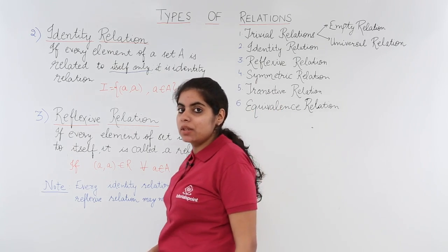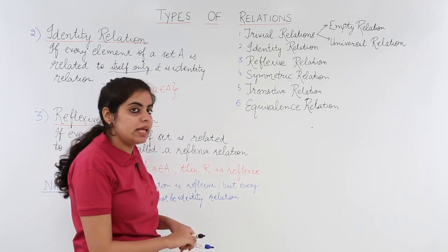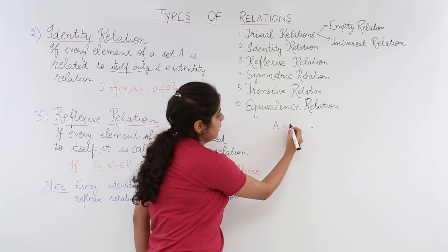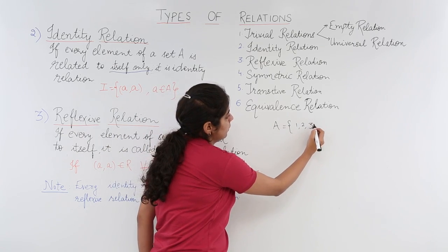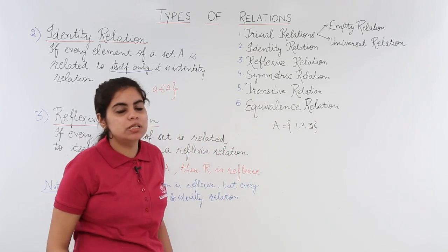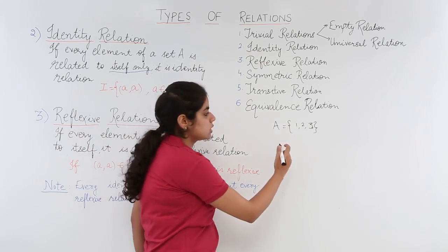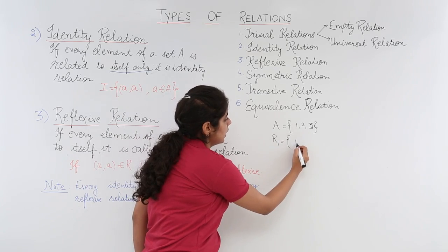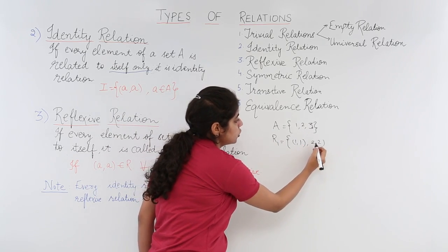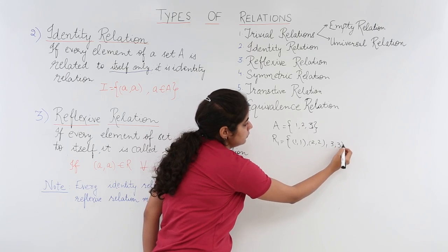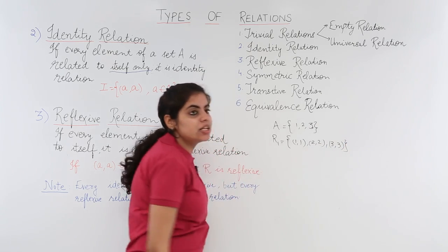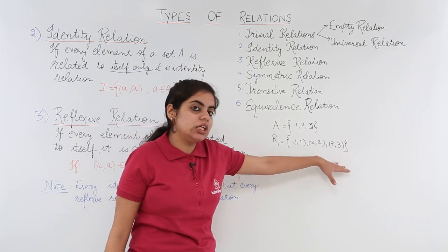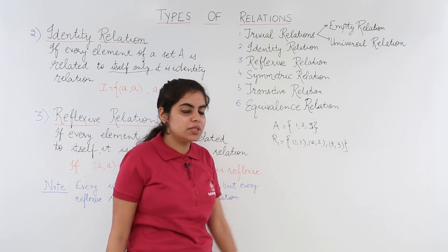Let's see one example. Suppose I have a set A with elements 1, 2, 3. Also, if I have a relation R1 defined as {(1,1), (2,2), (3,3)}, that means there are three ordered pairs for these three elements of the set.